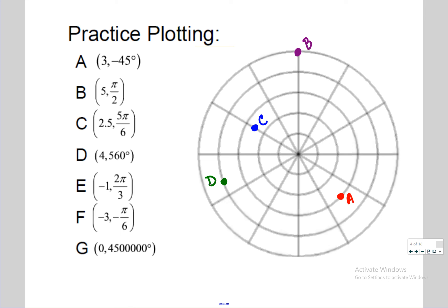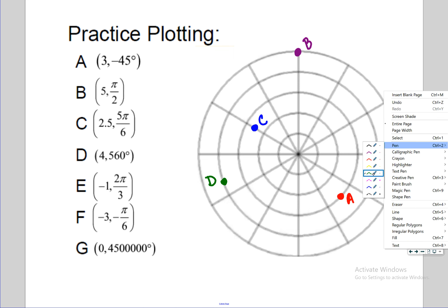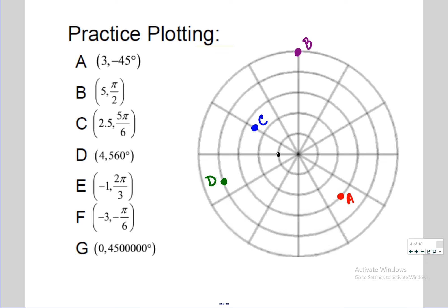For point E: negative one, two pi over three — go left one to start. Two pi over three is 120 degrees. Since it's a positive angle, rotate counterclockwise from that left point. Going 120 degrees counterclockwise — counting every 30 degrees: 30, 60, 90, 120 — puts you right there.